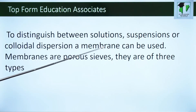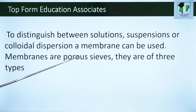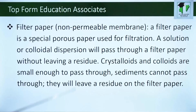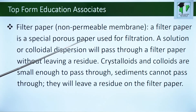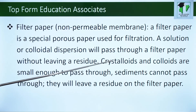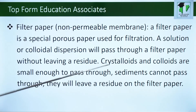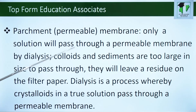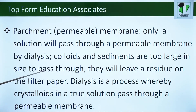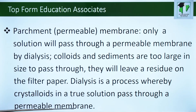To distinguish between solutions, suspensions, or colloidal dispersions, a membrane can be used. Membranes are porous and they are of three types. The first one is filter paper. Filter paper is a non-permeable membrane used for filtration. A solution or colloidal dispersion will pass through a filter paper without leaving a residue, while sediments cannot pass through and will leave a residue on the filter paper. The second type is parchment or permeable membrane. Only a solution will pass through a permeable membrane by dialysis. Colloids and sediments are too large to pass through and will leave a residue. Dialysis is a process whereby crystalloids in a true solution pass through a permeable membrane.